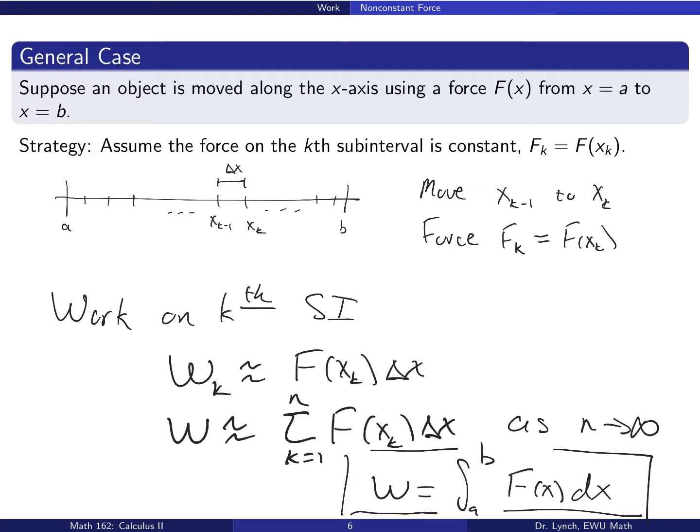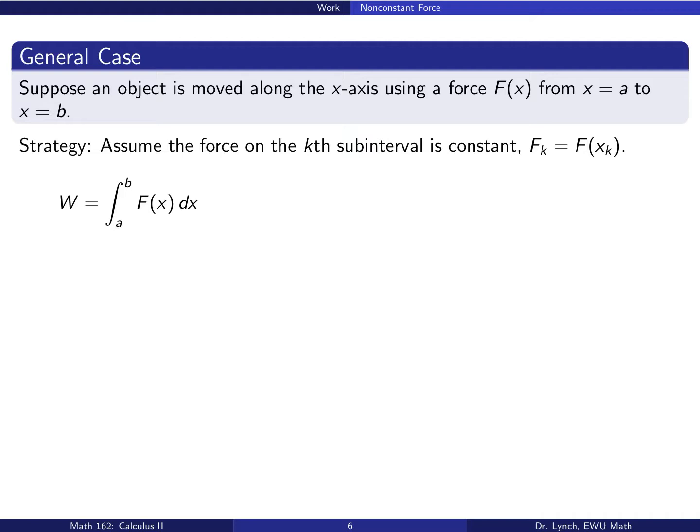So we see, again, the parallel with what we've been doing since the beginning of our area discussion, approximating a quantity with a Riemann sum. In this case, the sum k equals 1 to n of f of x sub k delta x, making that approximation exact by letting n go to infinity. In this case, we obtain the integral from a to b of f of x dx. So that will give us the work when we have a non-constant force.